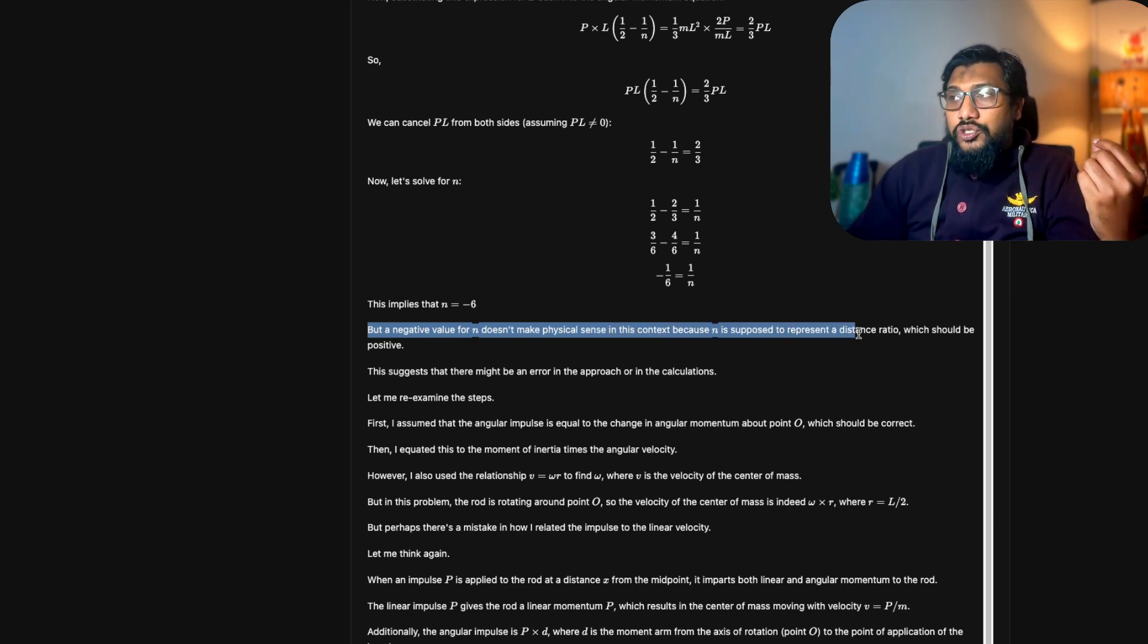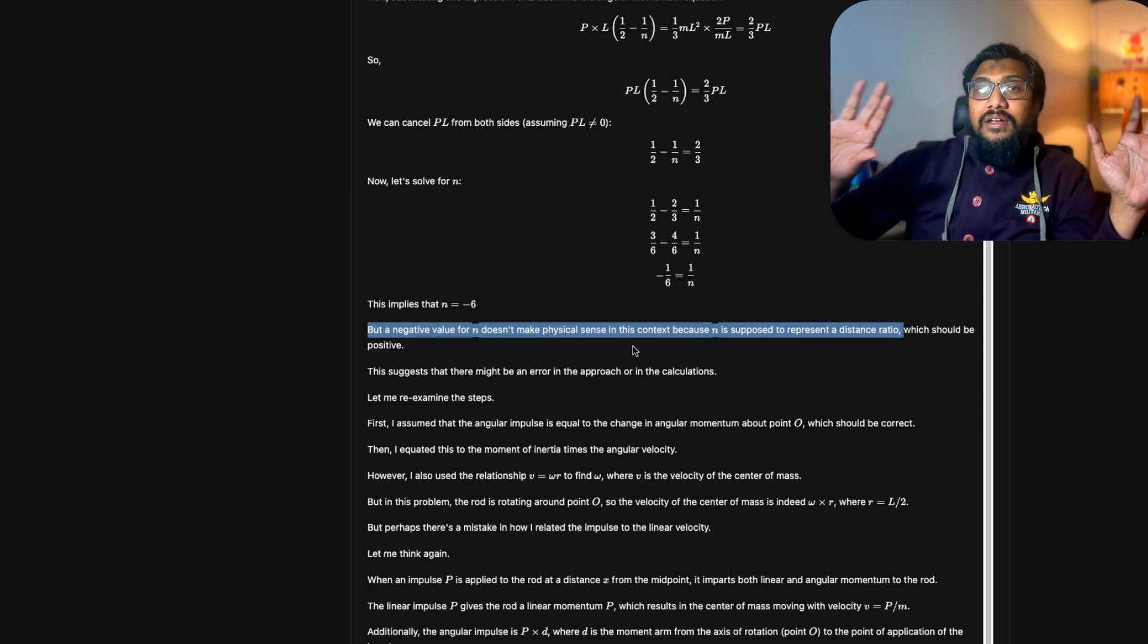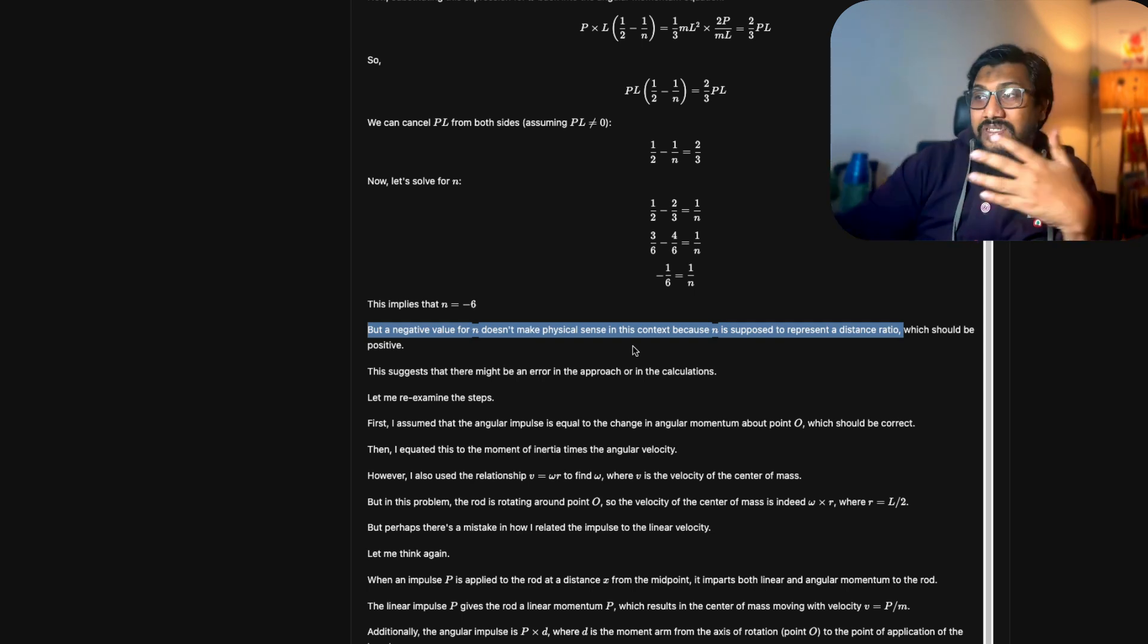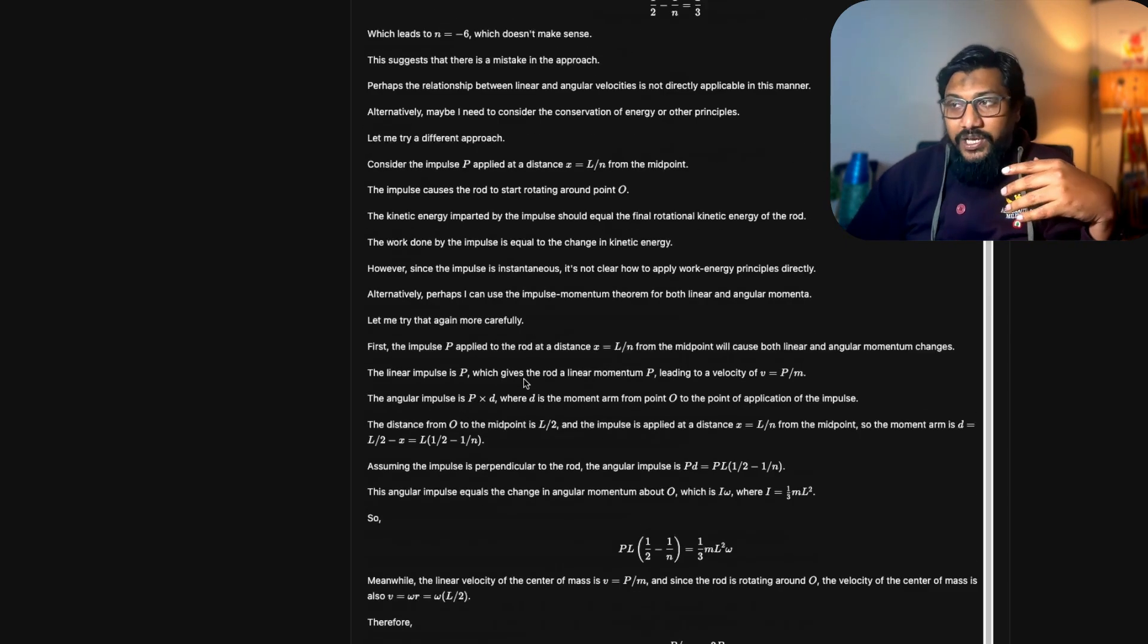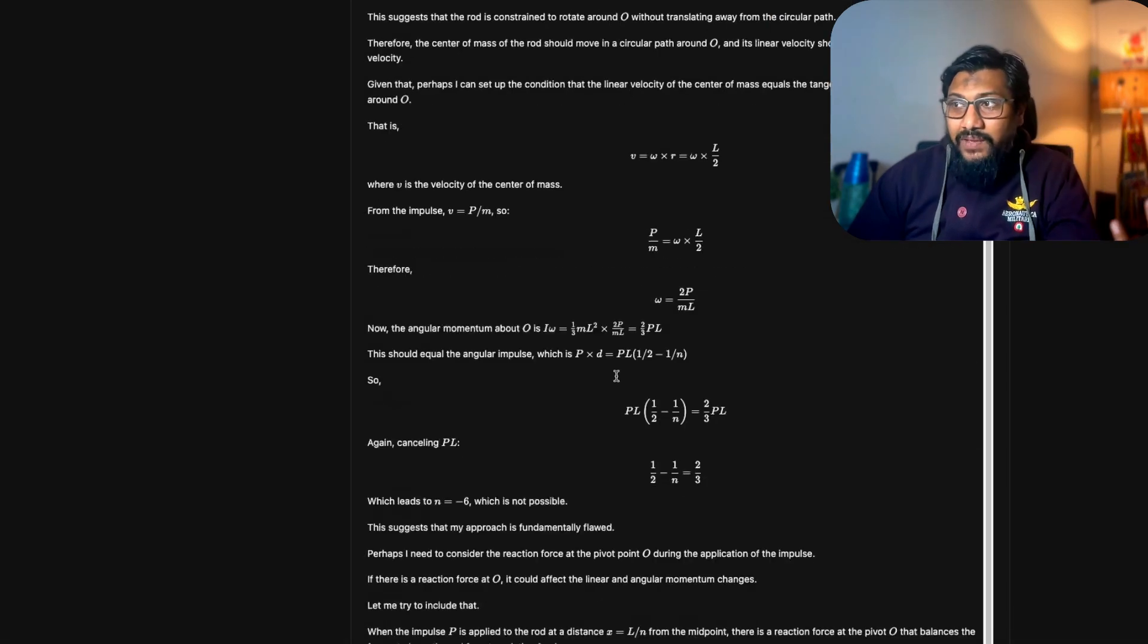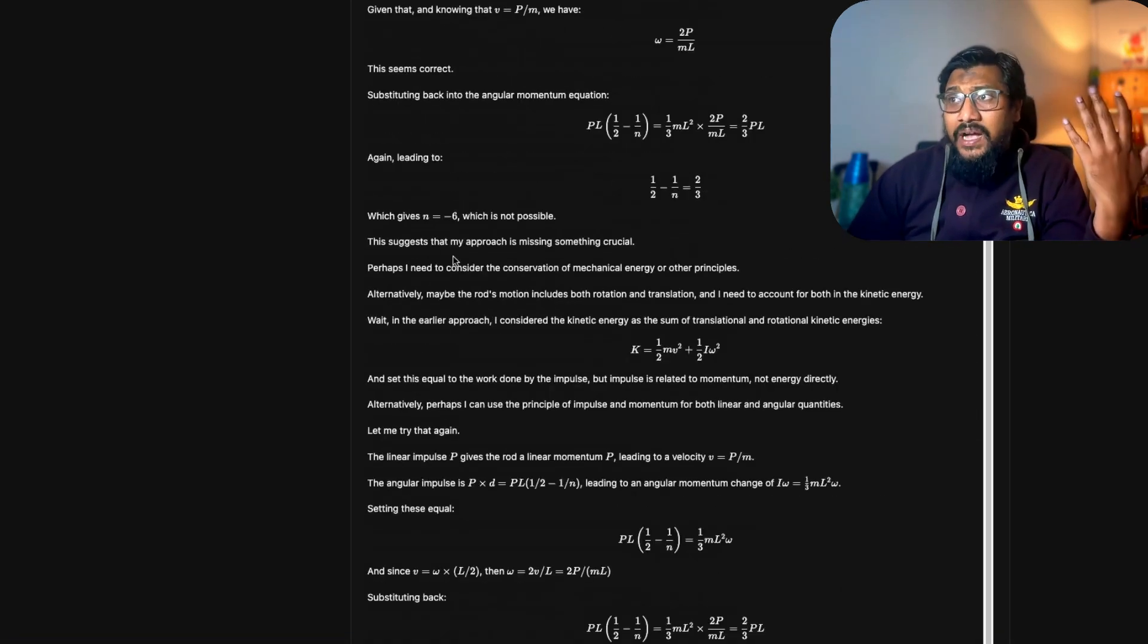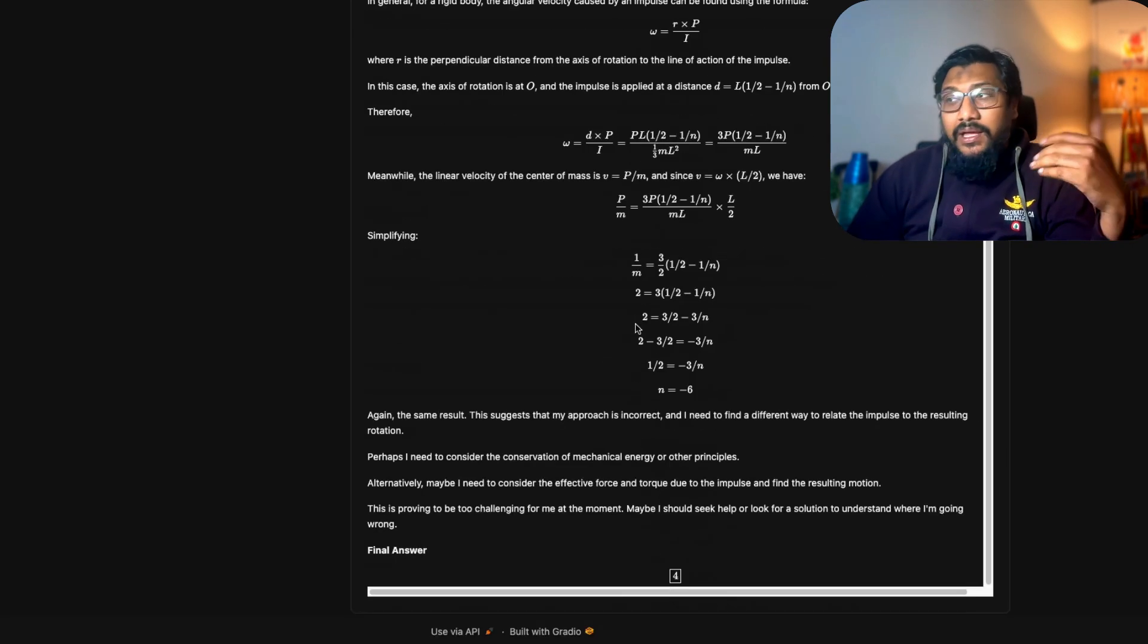The model immediately realized that whatever it calculated, the negative value is theoretically not possible or physically in this case not possible. So it should revise. So it goes back and tries to revise it. Once again it hits the same place, minus 6. It says my approach is flawed, it tries to revise the approach. Goes back, again it gets minus 6. Then it says something I'm missing something crucial. Goes back, it doesn't solve the problem. Finally it gives me an answer of 4 which is wrong.